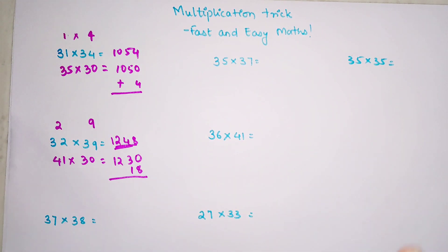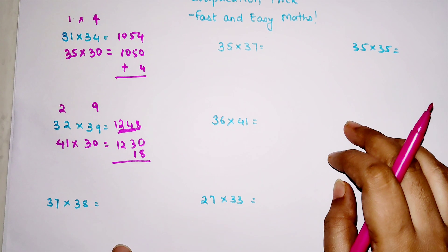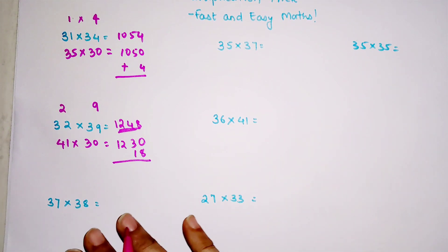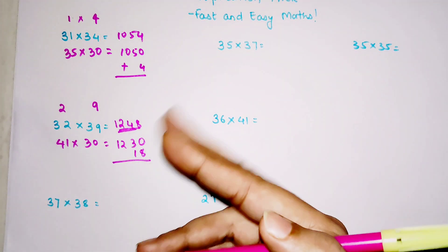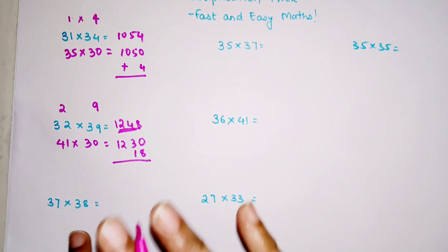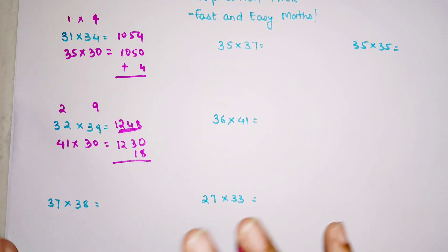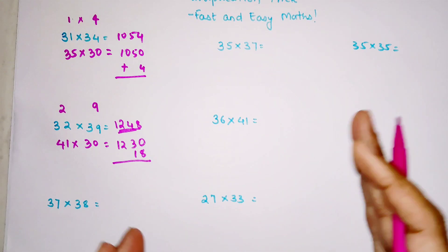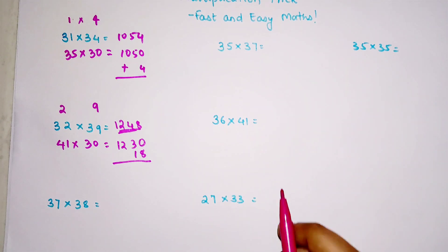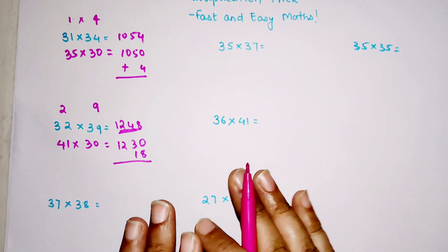For any trick to sink in, you need to practice at least 5 to 6 sums. At the end of this video I'm going to put up a DIY whose answer you can solve with this method and put your answers in the comment section. I will definitely read and let you know whether you are right or wrong. I want all of you to take a pause and try solving all of these on your own since I've already explained 2 sums with this trick.